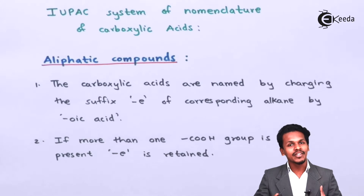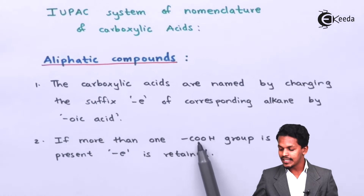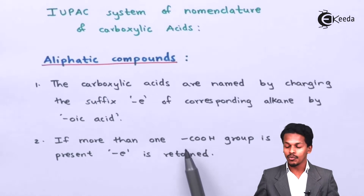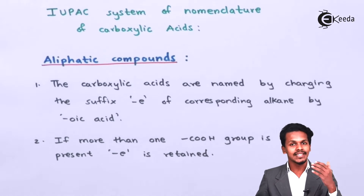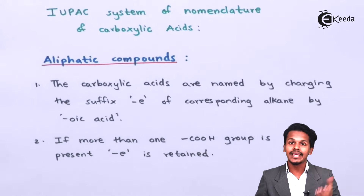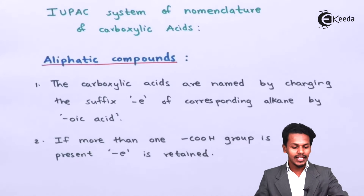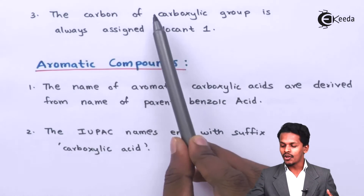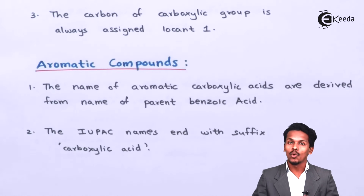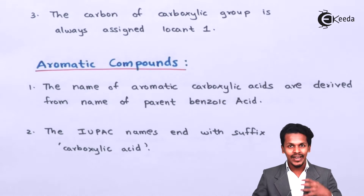If more than one COOH group is present in the compound, the '-e' suffix of the parent alkane is retained. Also, the carbon of the carboxylic group is always assigned the locant number 1. These are the key rules to keep in mind when giving IUPAC nomenclature to a carboxylic acid structure.